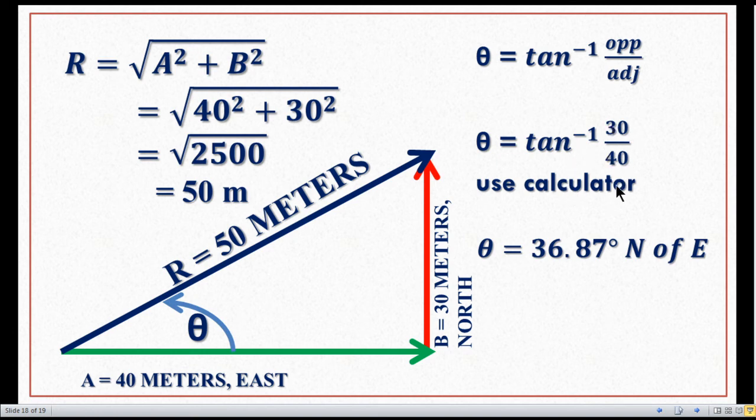So we can put 30 for opposite side and 40 for adjacent side. We use the calculator and find out which is equal to 36.87 degrees north of east as the vector angle.